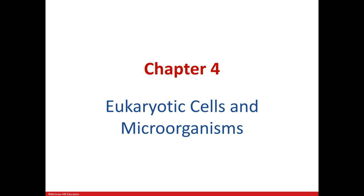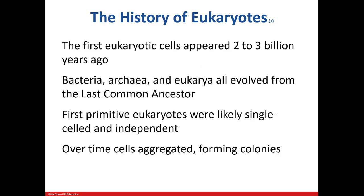In this chapter, we get to discuss in detail the eukaryotic organisms. Some of this may be a review for you. Eukaryotes have been around for quite some time — the earliest have been here for at least 2 billion years. We know that all three cell types came from the last common ancestor. Of course, the earliest of them were very simple and single-celled, very similar to prokaryotes.